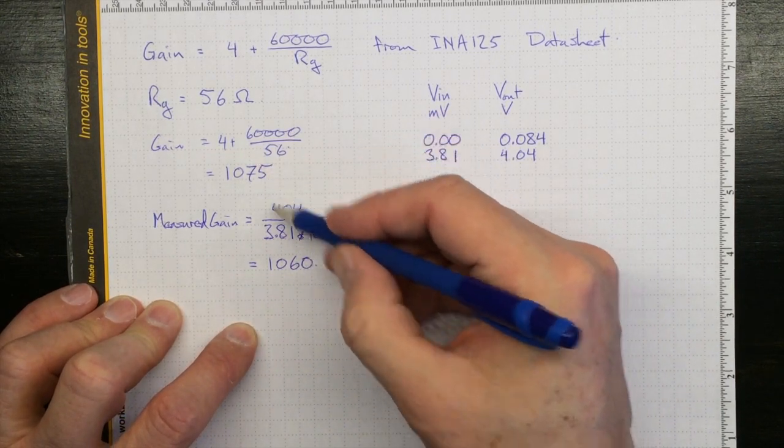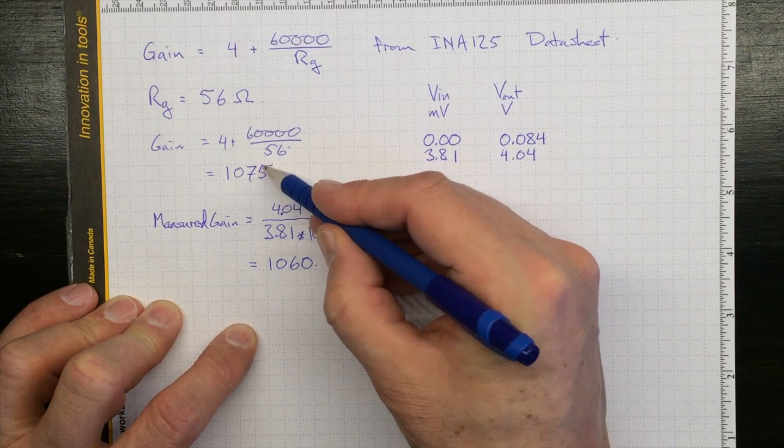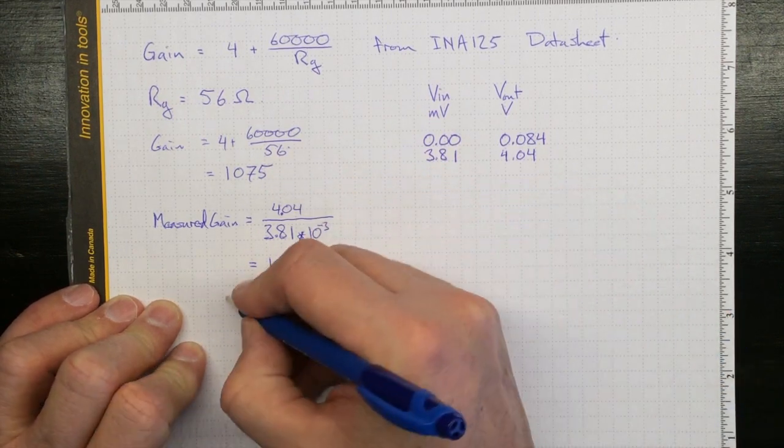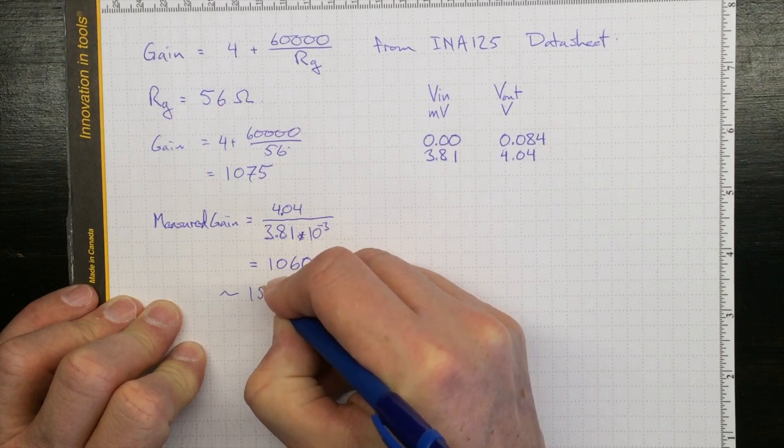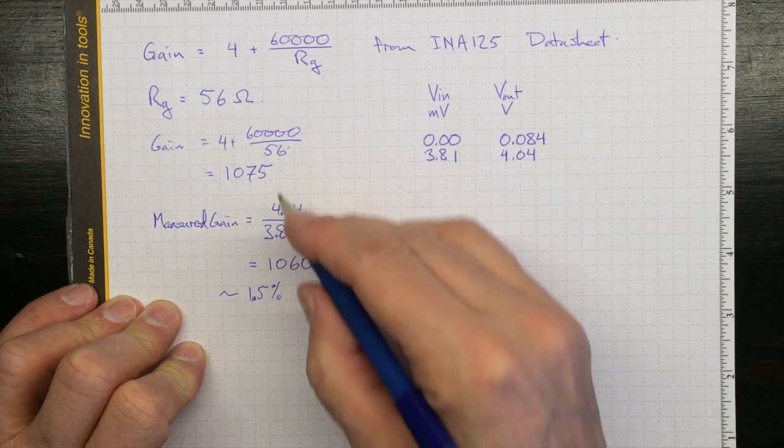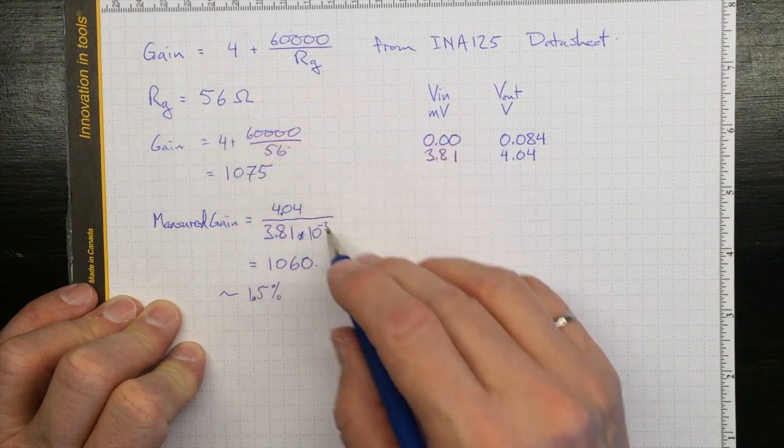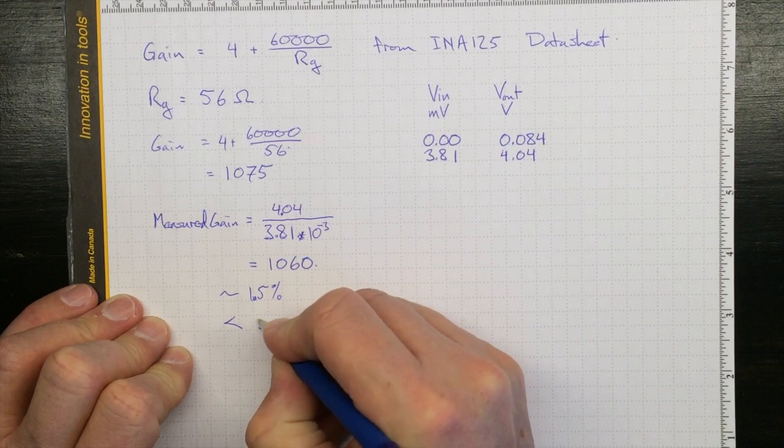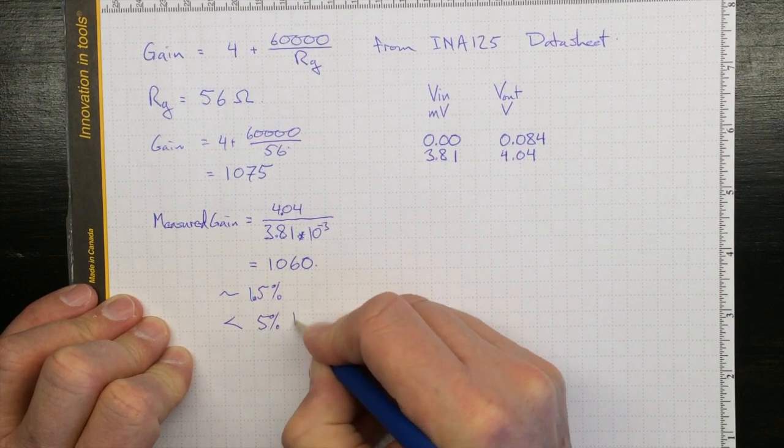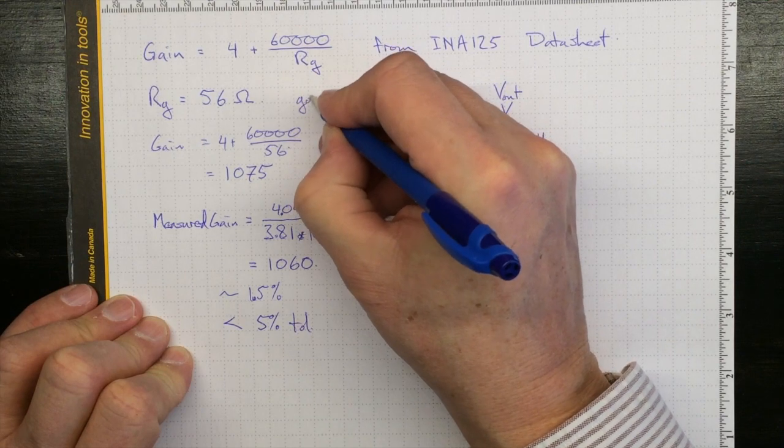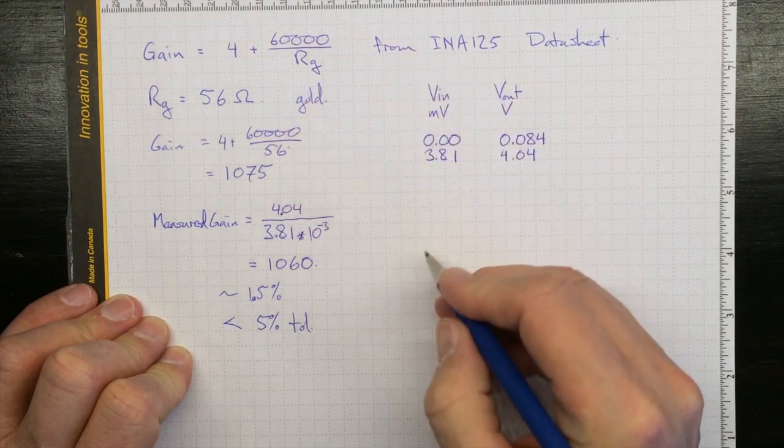So there is a difference here. There's a difference of about 15 on the gain, or 15 parts in 1,000. That's about a 1.5% difference between our measurement and our prediction based on the face value of the resistor. And that's easily explained as being considerably less than the 5% tolerance on the resistor, because this was a resistor with a gold band on its color code.